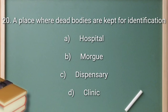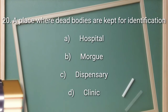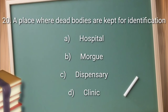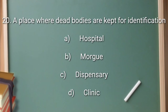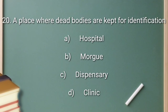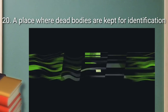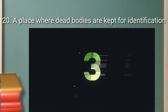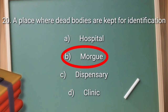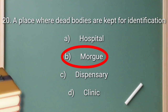Question number 20: a place where dead bodies are kept for identification. Option A: hospital. Option B: morgue. Option C: dispensary. Option D: clinic. The right answer is option B: morgue.